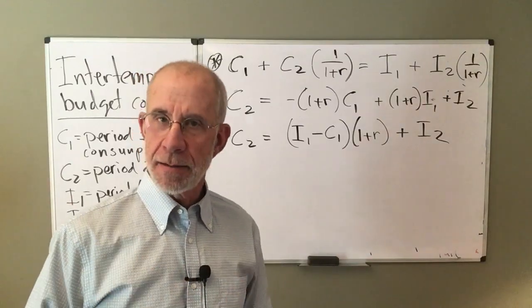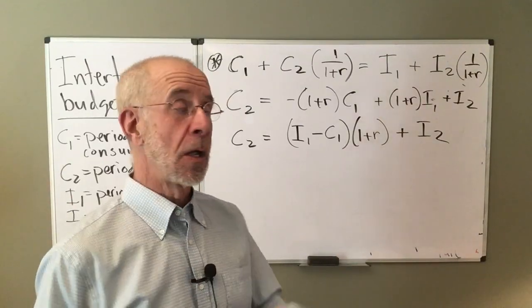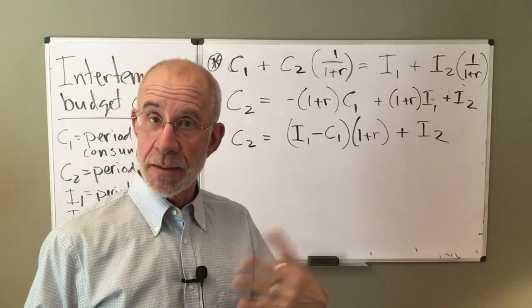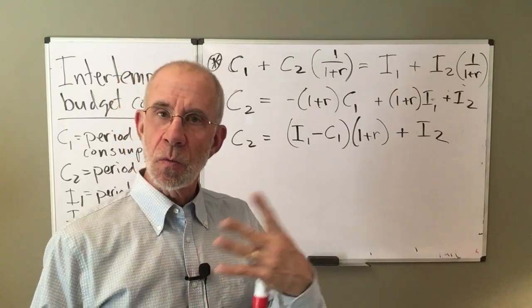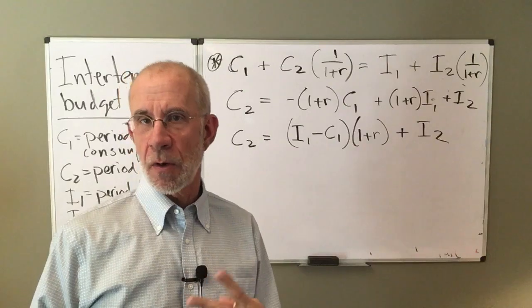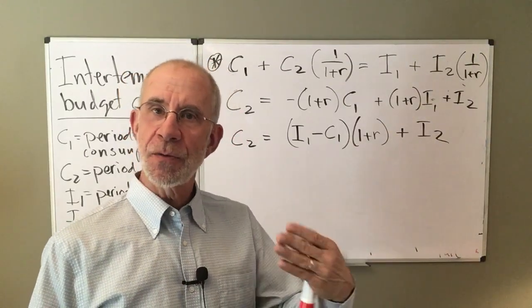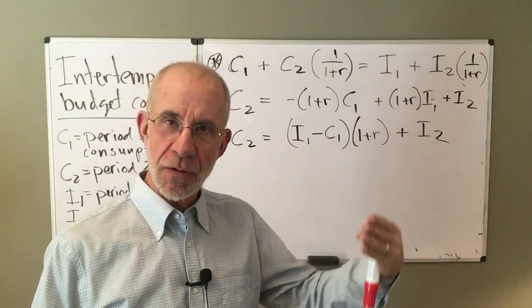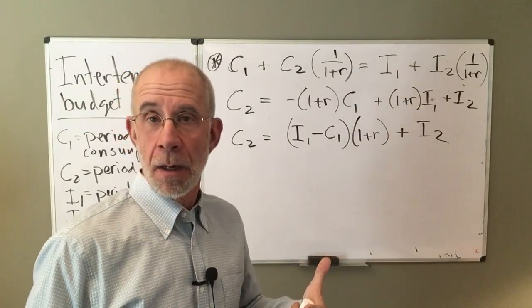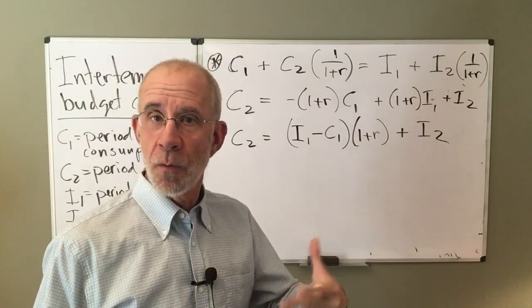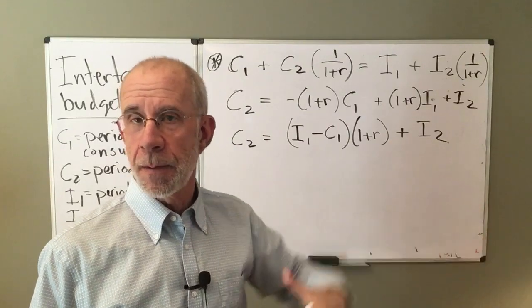But a lot of different economics questions come up when people make decisions over time. And so I want to introduce what's called the intertemporal budget constraint, which allows us to look at the decisions of consumers to buy stuff over a period of time.